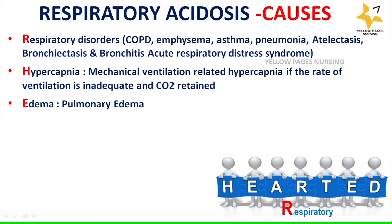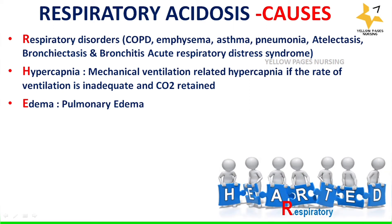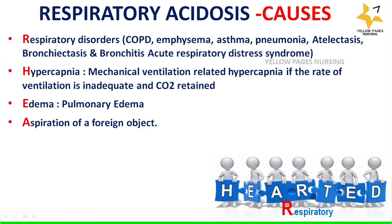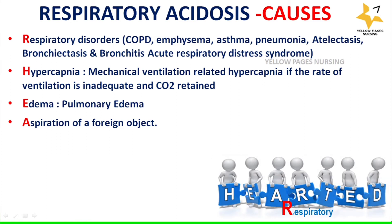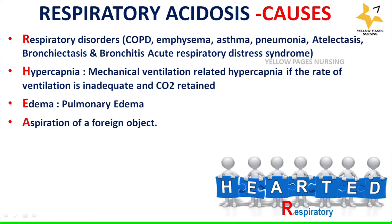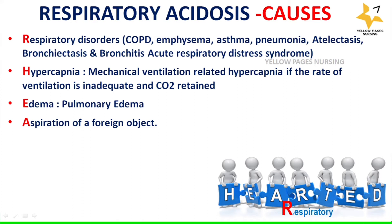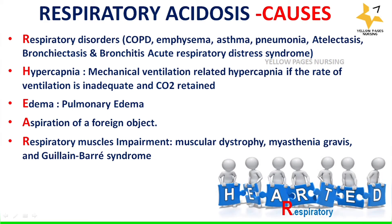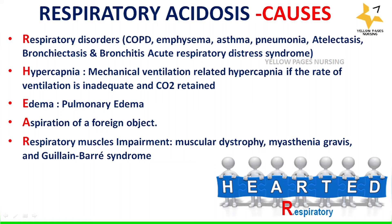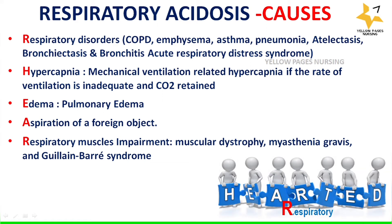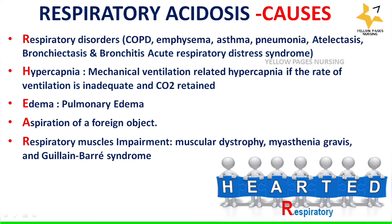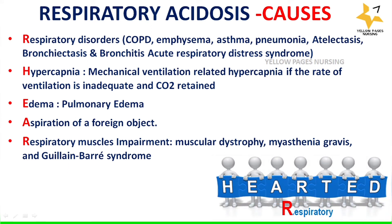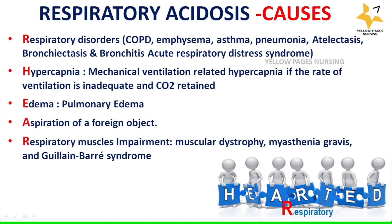A stands for aspiration of a foreign object, which in the most severe cases can cause choking and impaired breathing. R stands for respiratory muscle impairment. This includes muscular dystrophy, a group of muscle diseases resulting in increasing weakening and breakdown of skeletal muscles over time, and myasthenia gravis, a potentially life-threatening condition where respiratory failure occurs due to weakness of respiratory muscles, requiring mechanical ventilation.